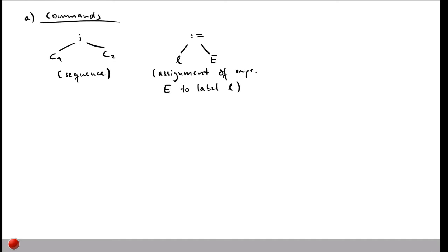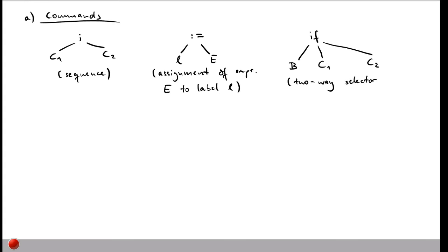We also have conditionals in our language. The abstract syntax for this is a node in the abstract syntax tree called 'if', which has three children: one for a boolean expression that determines whether we go left or right, and then two commands c1 and c2 executed depending on whether the condition evaluates to true or false. This is very similar to an if statement from any programming language, and is also called a two-way selector.